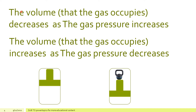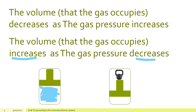This is important. The volume that the gas occupies decreases as the gas pressure increases. The volume that the gas occupies increases as the gas pressure decreases. To understand this, I have made a diagram for you. In the first diagram, the volume is increased and the pressure is decreased. In the second diagram, the volume is decreased and the pressure is increased.